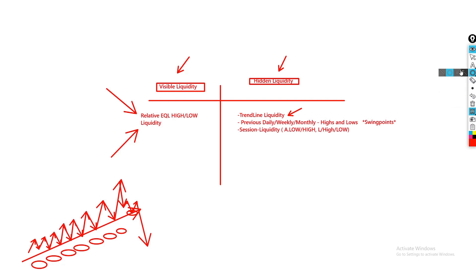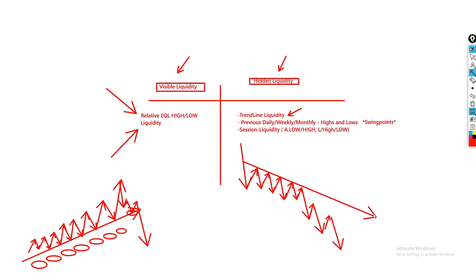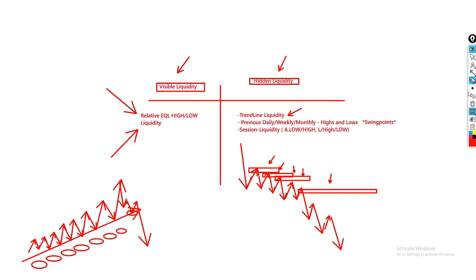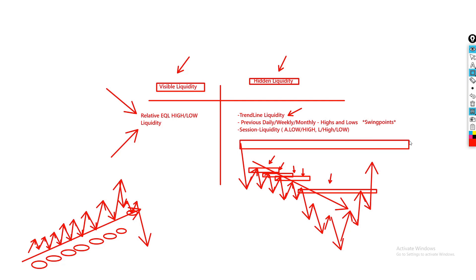Trendline liquidity also helps you avoid POIs that are not going to hold. For example, if I have a market structure going up and I see trendline liquidity all around a region, I'm not going to be looking for any POIs to take sales at that point, because I know that region is all liquidity. The probability tells me it's going to get wiped rather than hold and drop. I would wait for the trendline liquidity to get wiped into a possible origin block that I can then watch for potential entries.